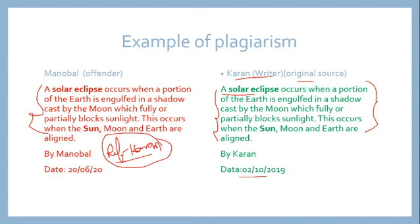Plagiarism by a student, professor, or researcher is considered academic fraud or academic dishonesty. The offender will be expelled. Nowadays, many universities and institutions use plagiarism detection software to deter students from plagiarizing. Special awareness workshops are also conducted for students to reveal that plagiarism is wrong.